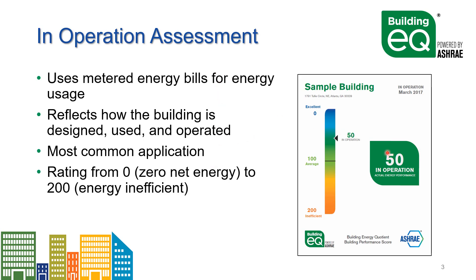Here is the ASHRAE printout — you can see it's a bar chart, a barometric reading of the building. A low energy building would score near zero for zero energy, so the lower the score in BuildingEQ, the better the building is performing. A building at around 100 is average, and a building closer to 200 has room for improvement. You can see the score displayed here, showing the in operation score.